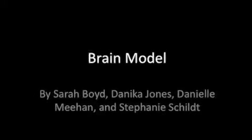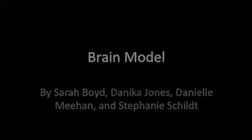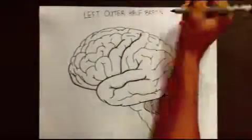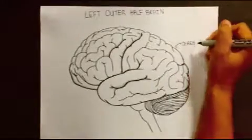This short clip will consist of three presentations of the human brain. The first one we will call the left outer half brain. We will locate the major lobes, parts, gyri and sulci.